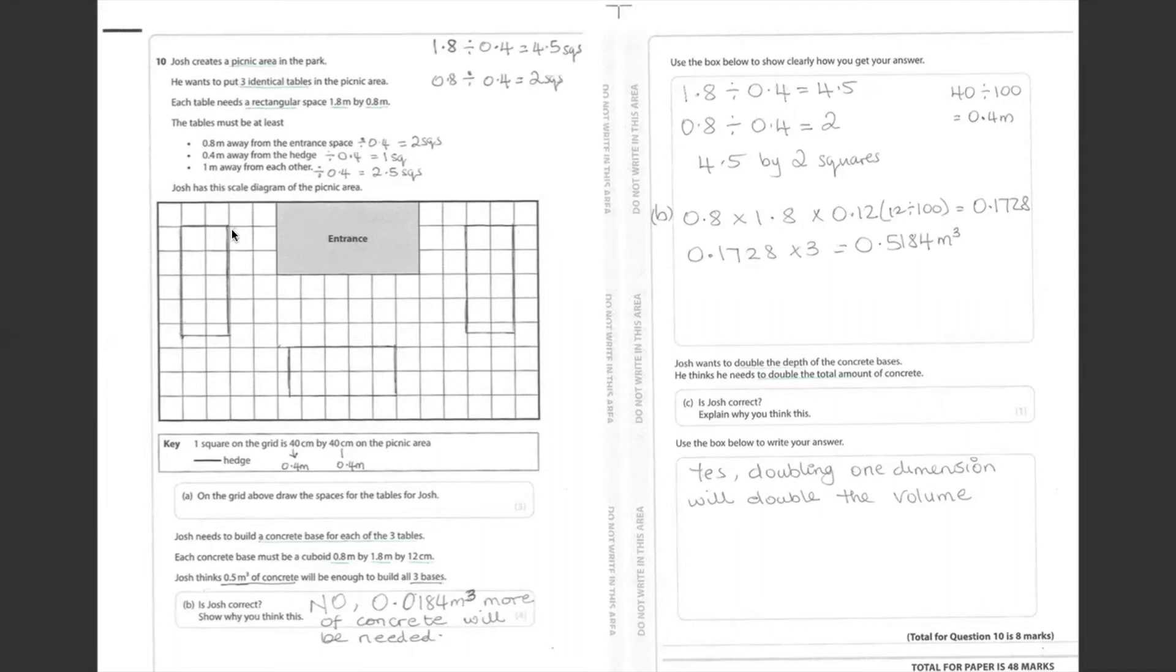Since we need three tables, this is going to be my first table here, the second table and the third table. The rules here say the table must be at least two squares away from the entrance space.